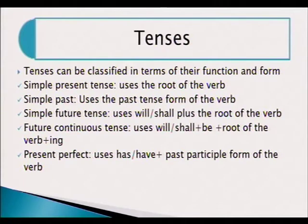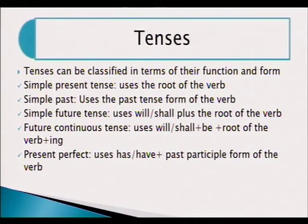Then there is the present perfect tense — for things that happened in the past but still have significance for the present, or are still happening. For example, 'he has been studying at IOL for the past three years' — that means he started three years ago but is still continuing to study. It is formed by using 'has' or 'have' plus the past participle form of the verb. If you look at your table of verbs, you have the present tense, the simple past, and the past participle is the third one. These are always used with structures like 'has' and 'have'.